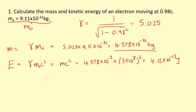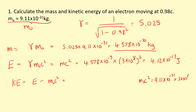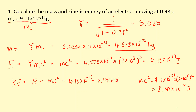To get the kinetic energy, I take the total energy and subtract the rest mass energy. Let me quickly work out the rest mass energy: m-naught c-squared equals 9.11 times 10 to the minus 31 times c-squared. Subtracting the rest mass energy from the total energy — 4.12 times 10 to the minus 13 minus the rest mass energy — gives a kinetic energy of 3.30 times 10 to the minus 13 joules.